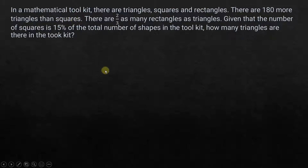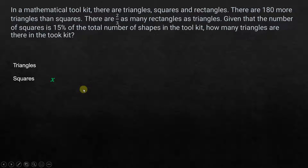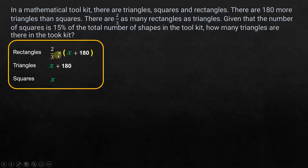Let's assume the number of squares is represented by x. Since triangles are 180 more than squares, triangles equal x plus 180. Rectangles are two-thirds of the triangles, so rectangles equal two-thirds times (x plus 180).